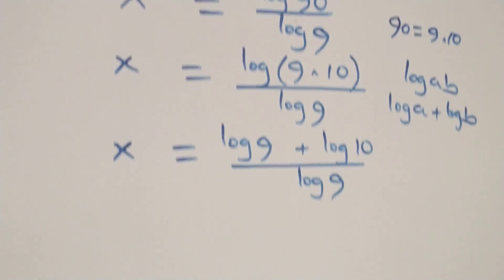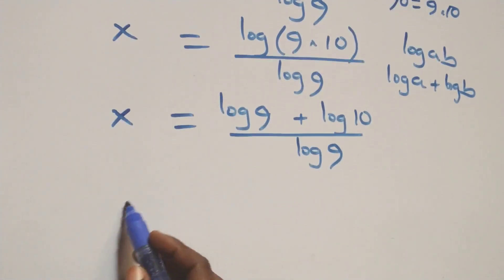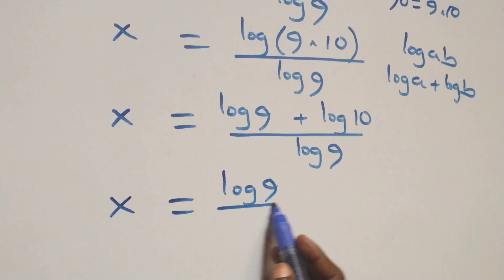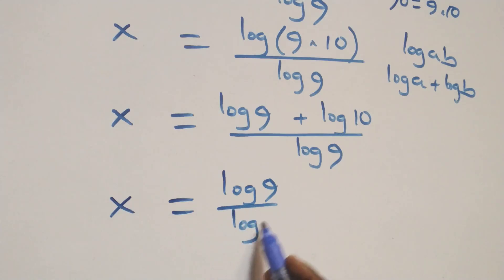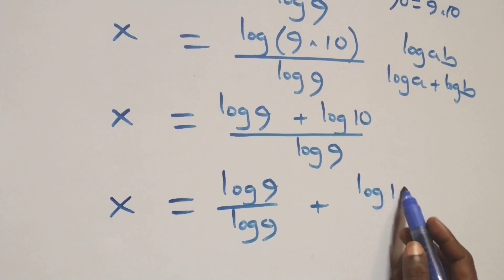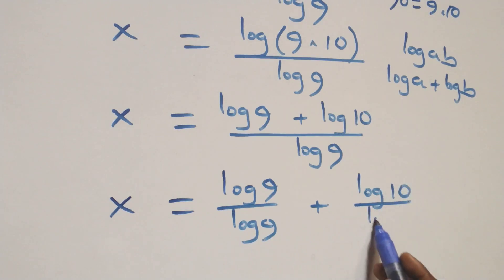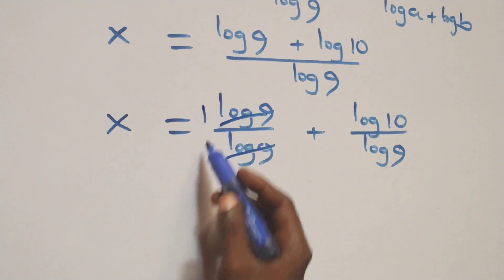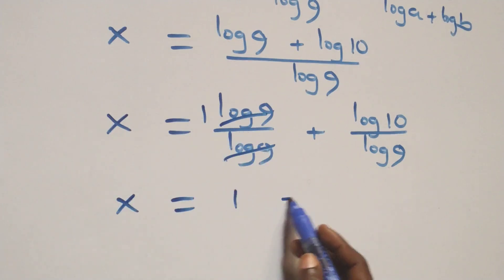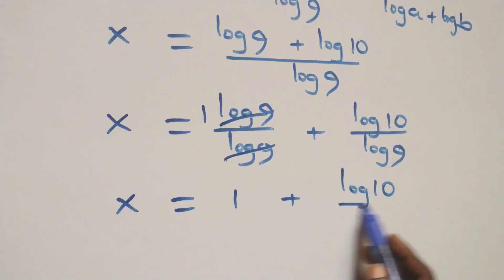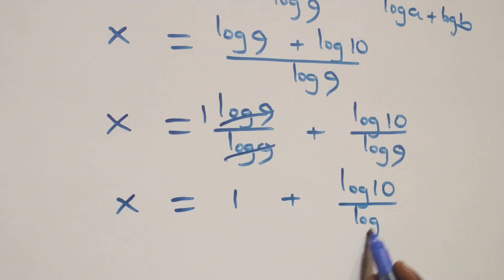We then separate this into two fractions: x equals log(9) over log(9), plus log(10) over log(9). Here log(9) over log(9) cancels to give one, which implies x equals 1 plus log(10) over log(9).